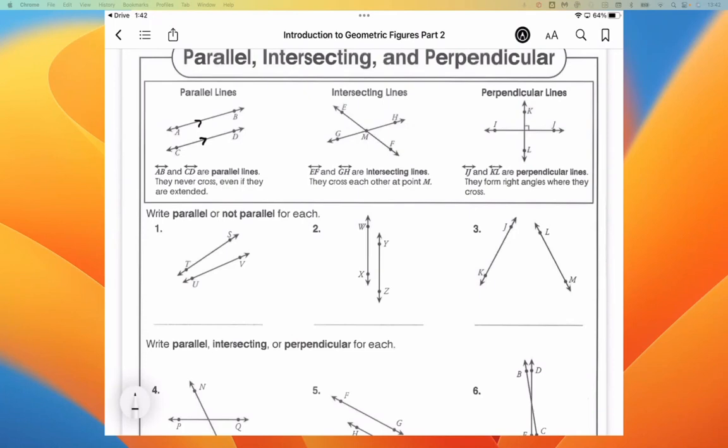Intersecting lines are any pair of lines that just run into each other, like roads at intersections going through town. Perpendicular lines are intersecting lines that intersect and form a 90-degree angle. So all perpendicular lines are intersecting lines. Only some intersecting lines are perpendicular.